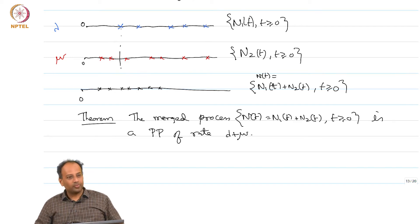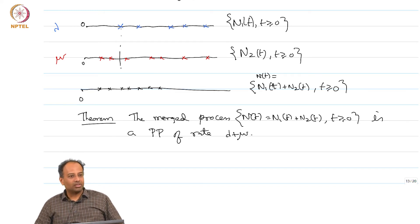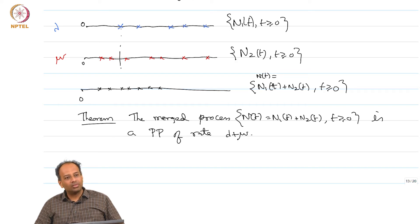For the merging problem, when you merge 2 processes you only know that the result is a counting process, but you do not yet know whether it is a Poisson process. This theorem I am claiming has not yet been proved. You can use it to claim that two simultaneous occurrences have probability 0 only after you have proved this theorem.